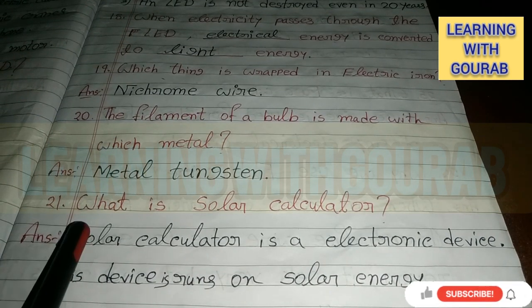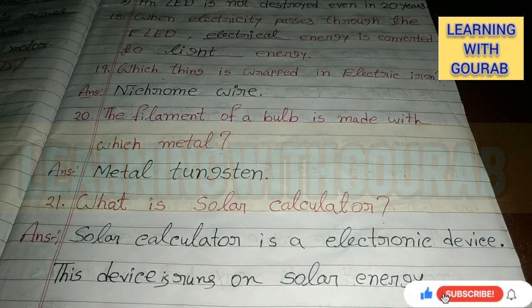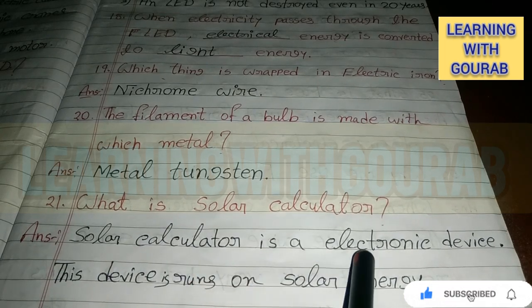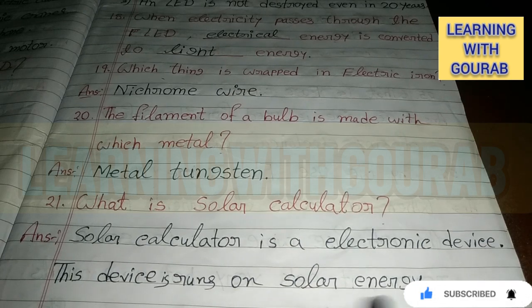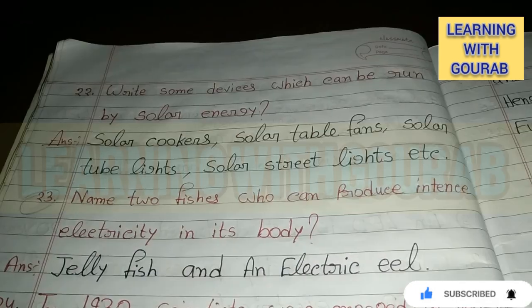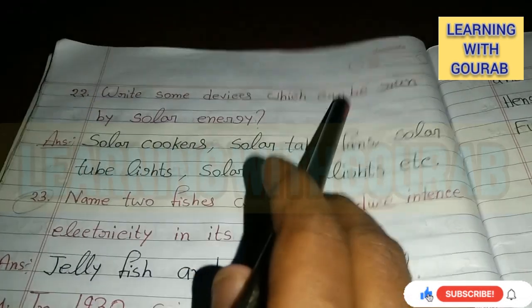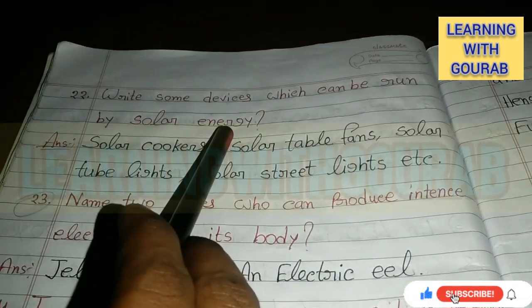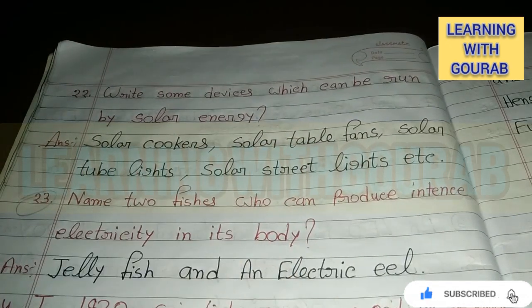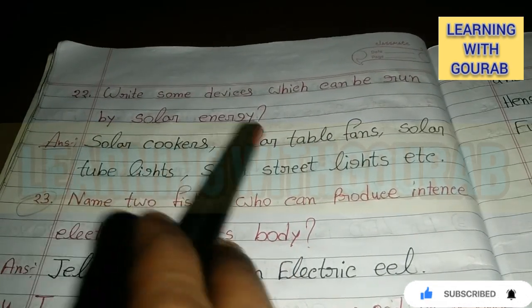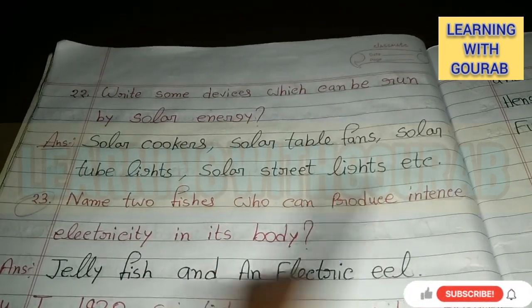Next question: What is a solar calculator? Answer: A solar calculator is an electronic device that runs on solar energy. Next: Write some devices which can be run by solar energy. Answer: Solar cookers, solar table fans, solar tube lights, solar lights, solar street lights, etc.